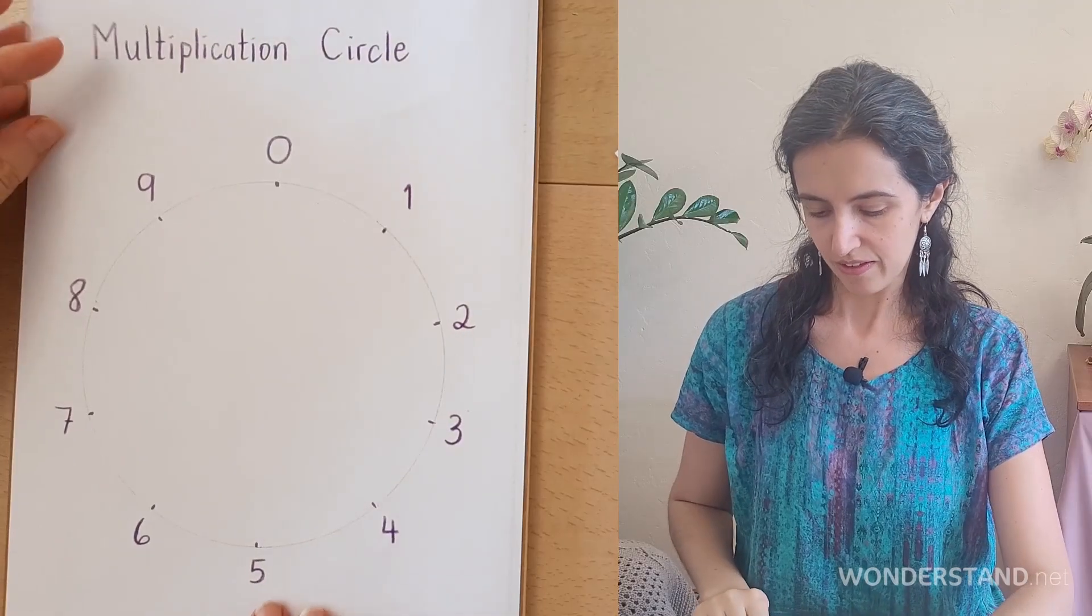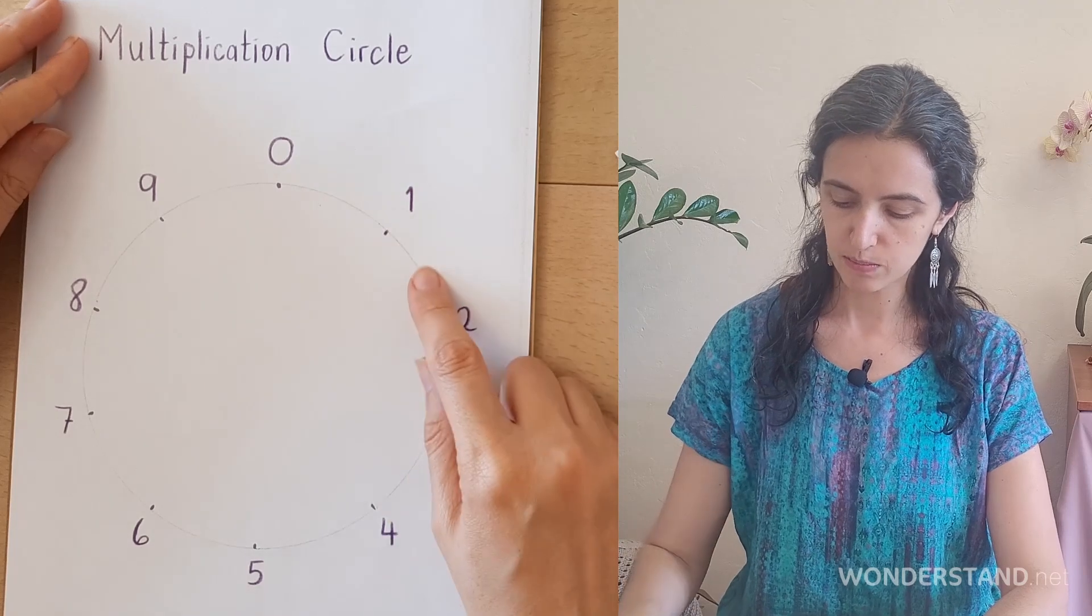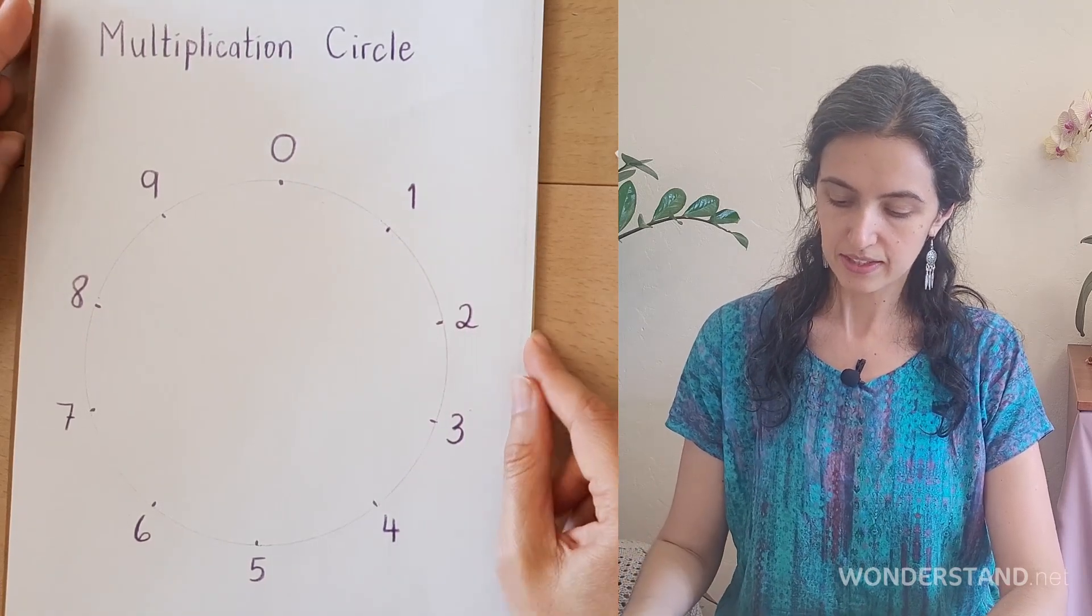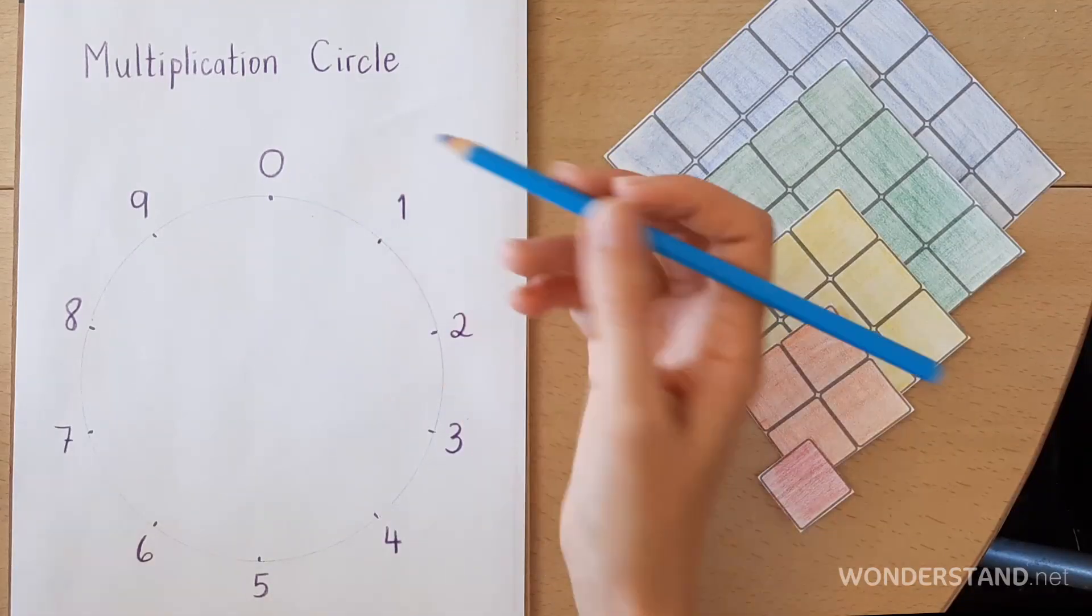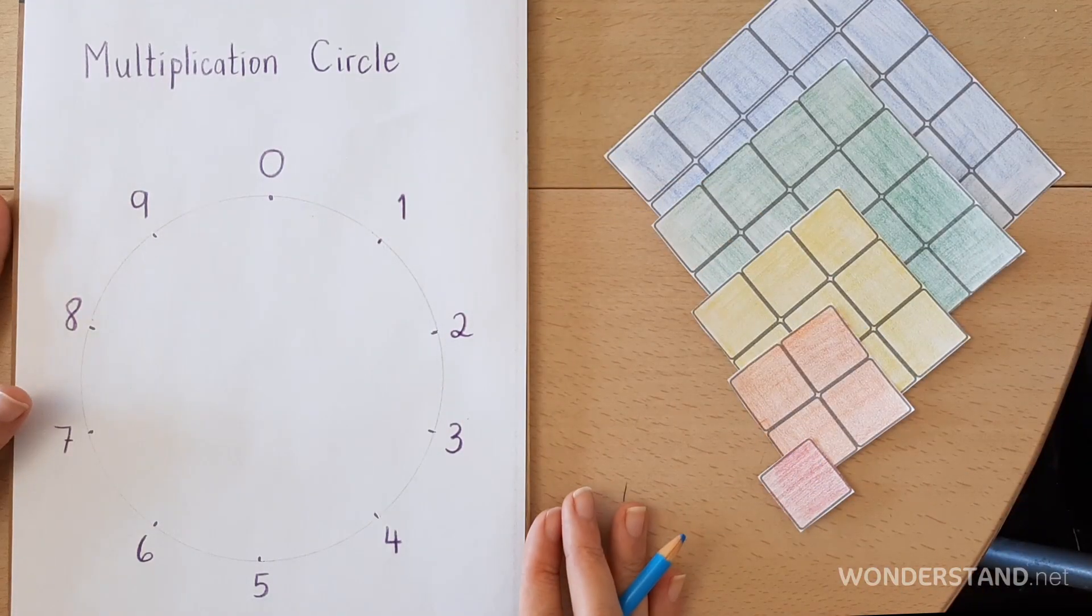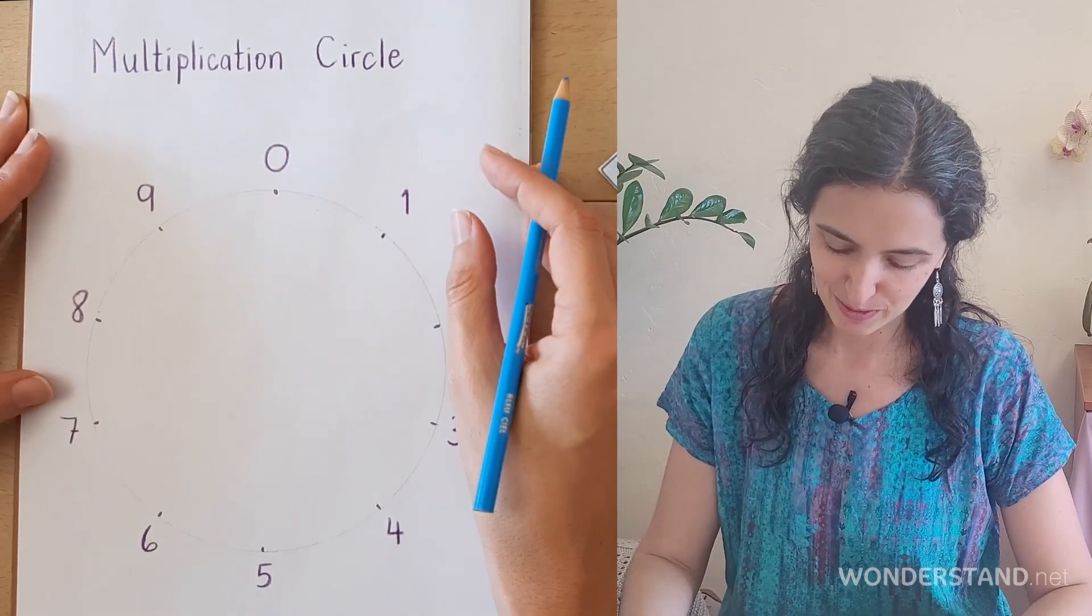Here we have the numbers 0 through 9 so there are 10 points equally spaced on the circle and today we're working with the 7 times table which is maybe not the easiest one but it's very much in our grasp. So this is a tool that can help us as we practice because that is the best way to have these numbers, these multiples of 7, in our memory forwards and backwards and out of order.